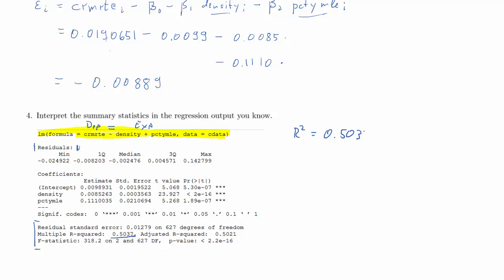The R-squared is just over 50%, meaning a bit more than 50% of the variation in the dependent variable — the crime rate across counties — is explained by variation in the explanatory variables. We also have an adjusted R-squared, which adjusts for the number of explanatory variables. When comparing regression models with different numbers of explanatory variables, you should look at the adjusted R-squared. Next is the residual standard error, labeled s: 0.01279.